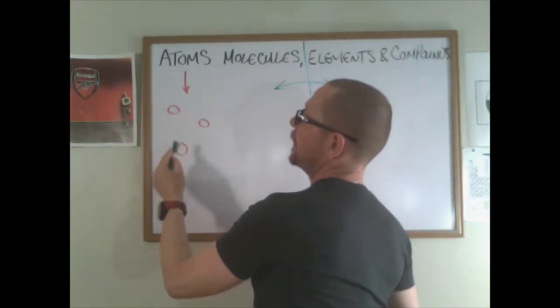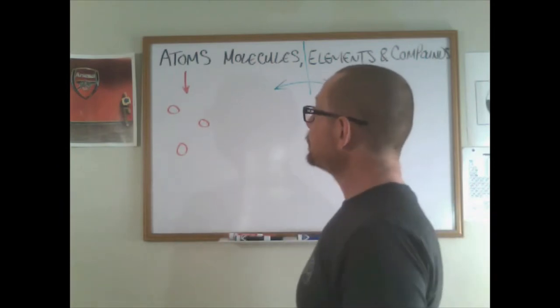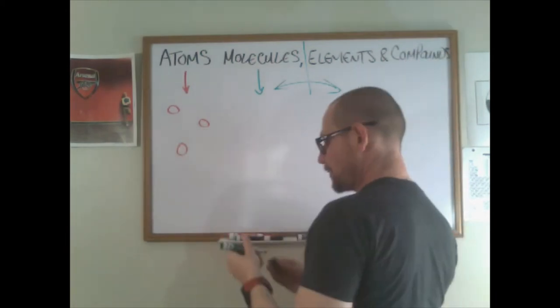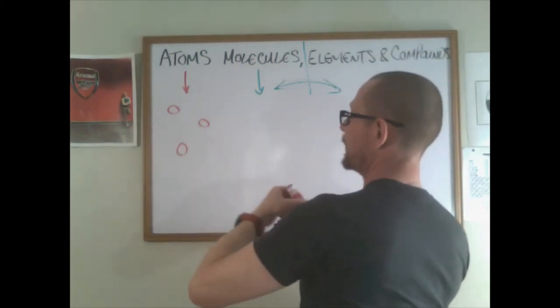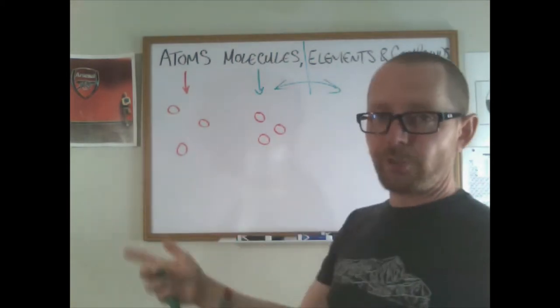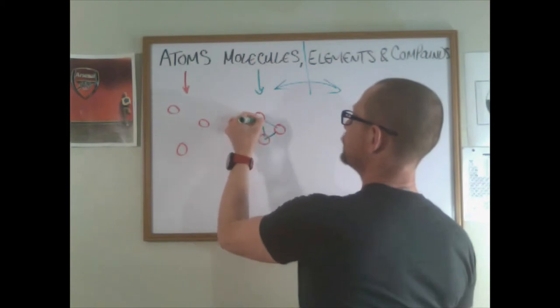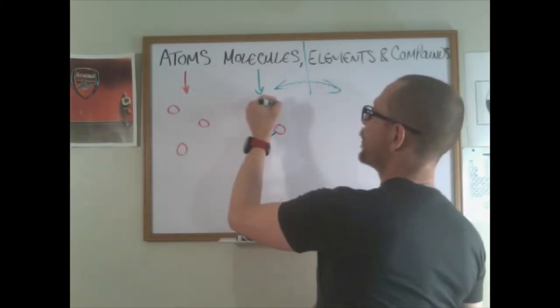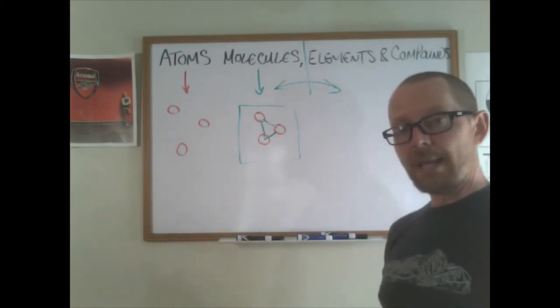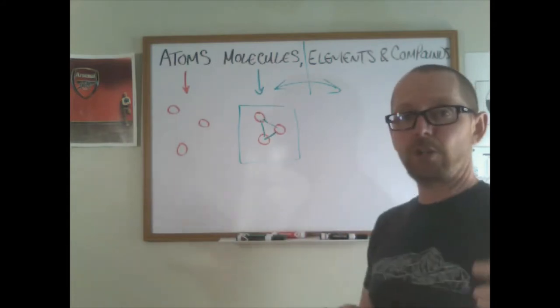Molecules on the other hand are collections of atoms. So we've got the same three atoms, let's just say, but now instead of being dispersed and free to move, they're bound together. This is one molecule made of three atoms.